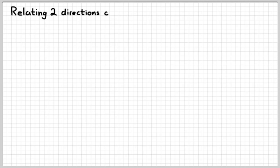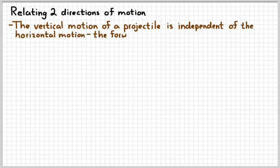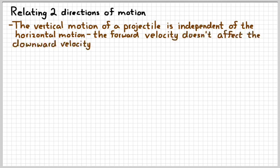So let's see if we can relate the two directions and the motion together. The thing that we have to realize is that the vertical motion of a projectile does not depend in any way on the horizontal motion of the projectile. In other words, the forward velocity doesn't affect the downward velocity. So that's another important thing to remember. So if we can understand how the forces work, then that should help us understand why this must be true.